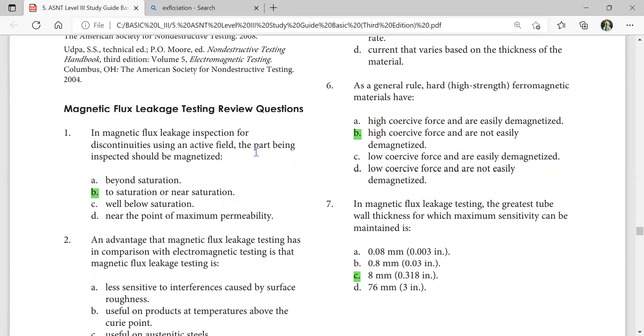In magnetic flux leakage inspection for discontinuities using an active field, the part being inspected should be magnetized to saturation or near saturation.